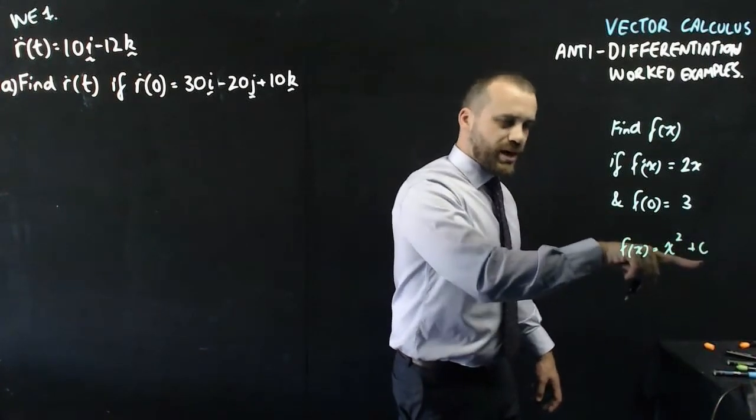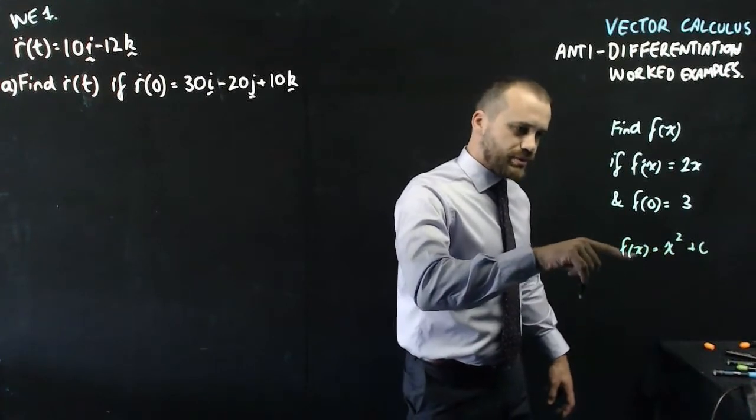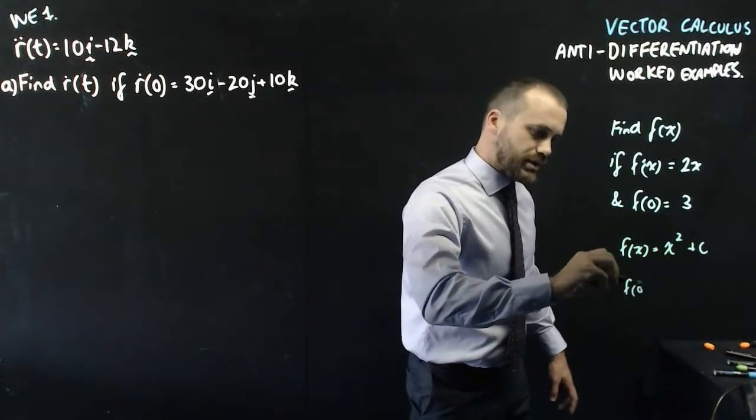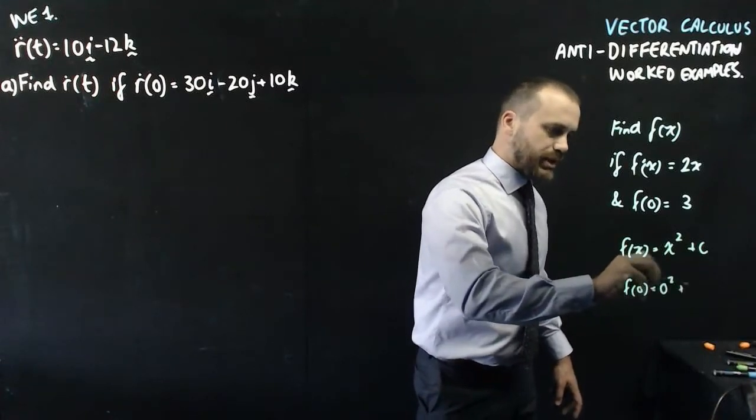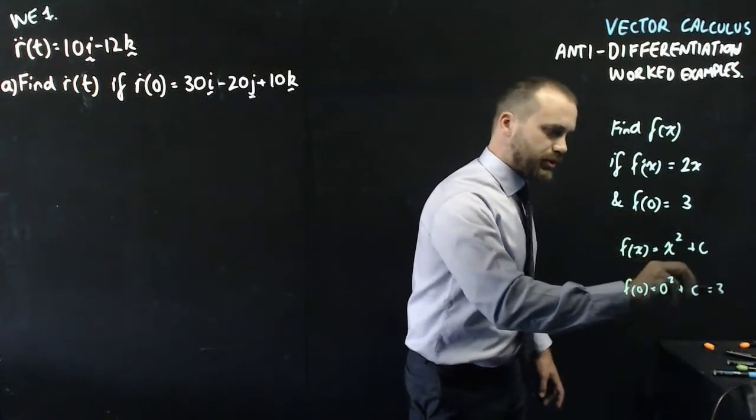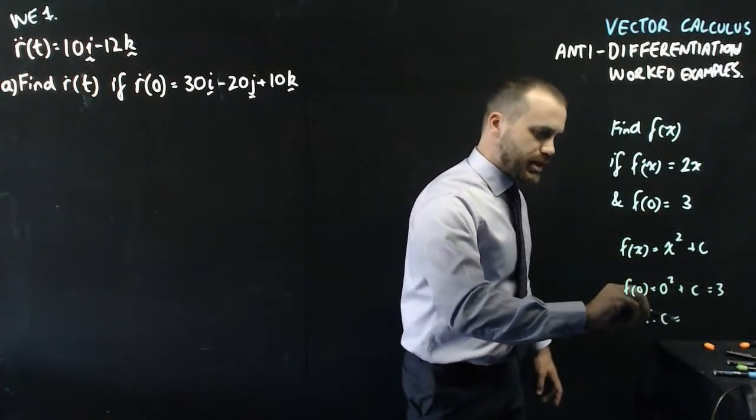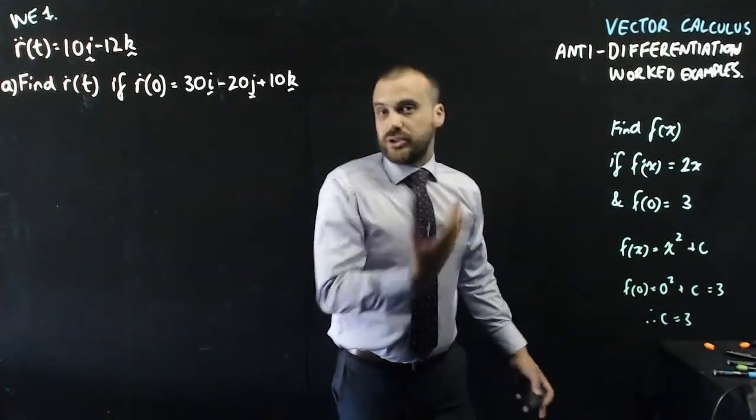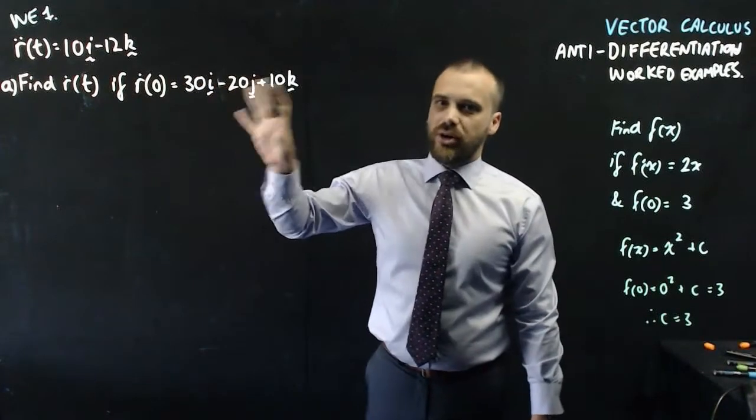And that c value, we can solve it by subbing 0 into this. f of 0 equals 0 squared plus c. And we know f of 0 equals 3 because we're told there. Therefore c equals 3. Now that c is our initial value and the same thing is going to hold here.